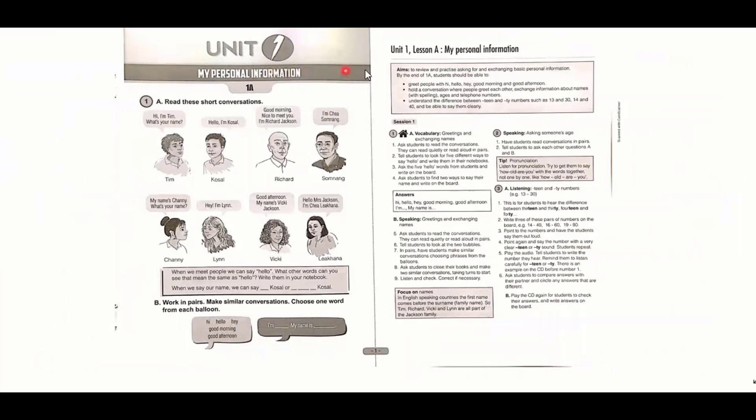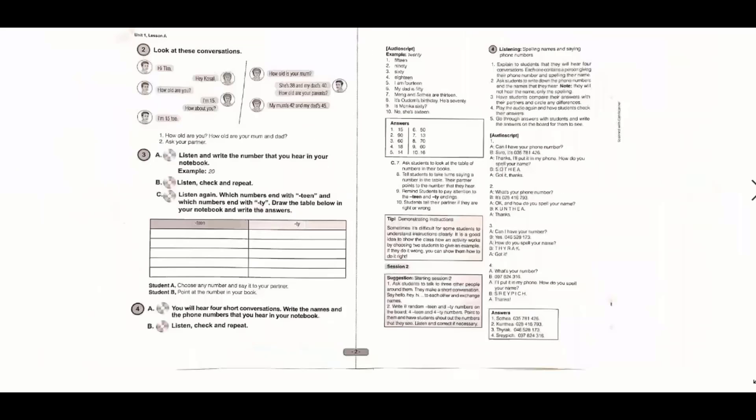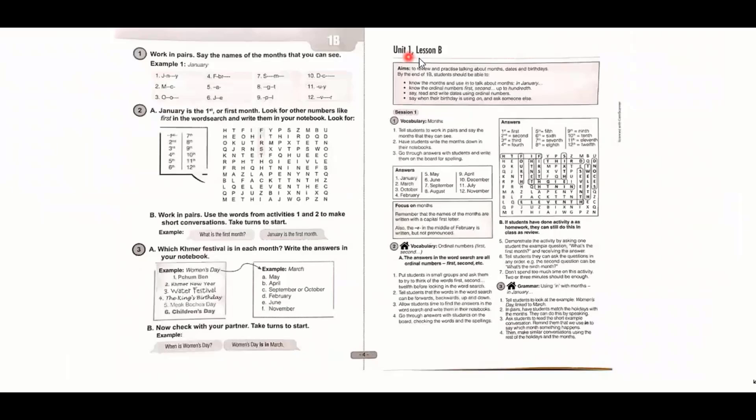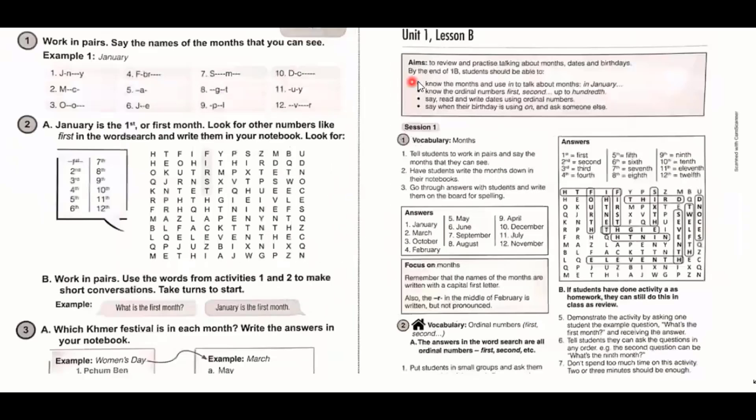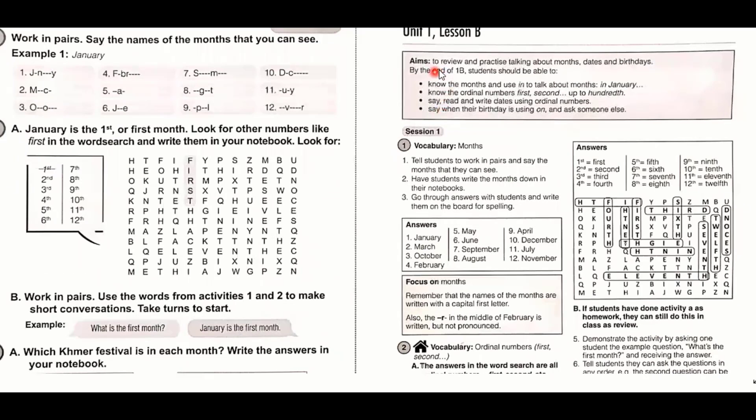Remember that one unit has two different lessons: Lesson A and Lesson B. In Lesson A and Lesson B, you will see different aims and subsidiary aims. For example, in Unit 1 Lesson B, we have another aim: to review and practice talking about months, dates, and birthdays. This is the main aim, and the subsidiary aims - there are four here, different from before.